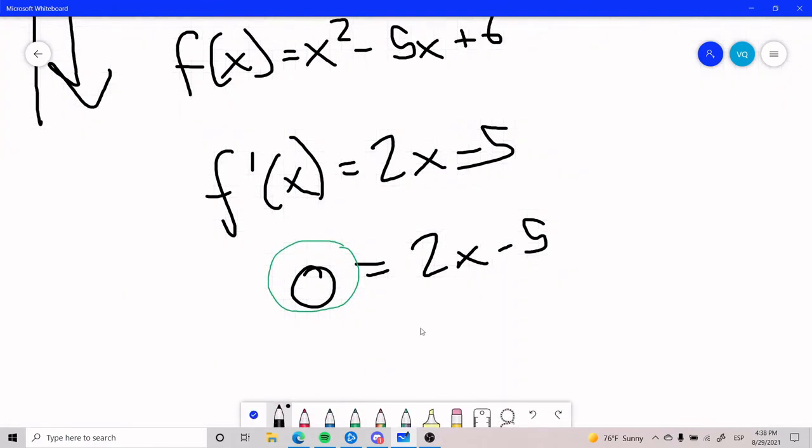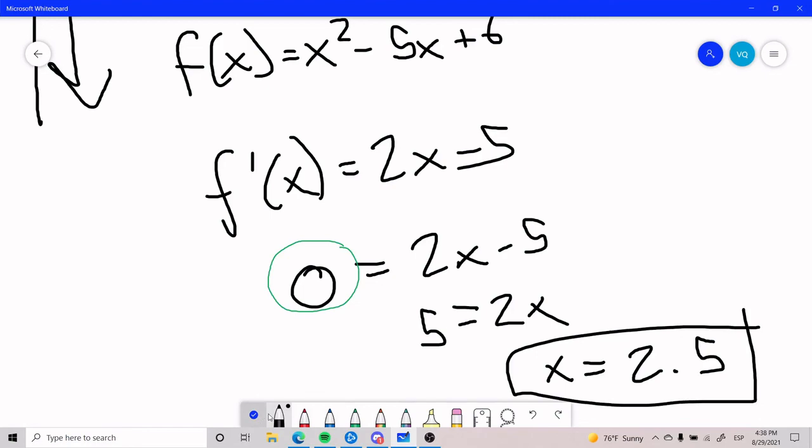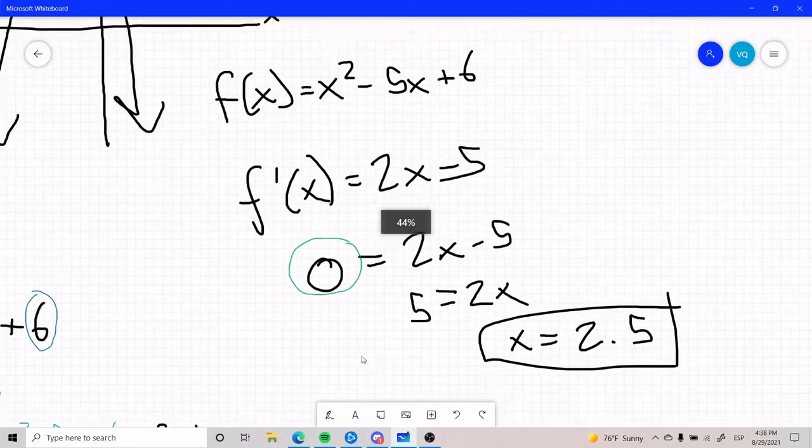So in this case, if I were to get x alone, I end up with 5 equals 2x, x equals 2.5, because 5 divided by 2. And if I go ahead and graph this, we can double check if that's true or not.